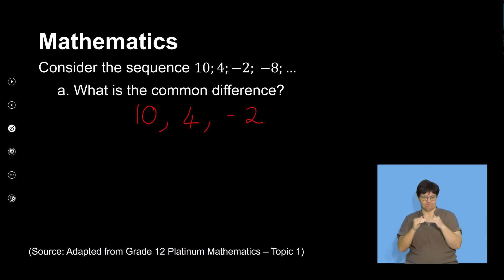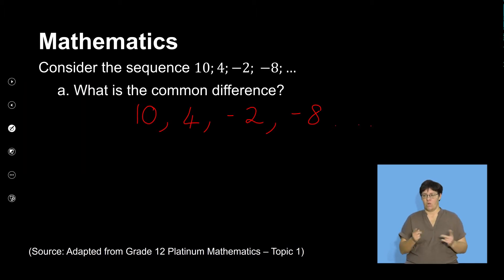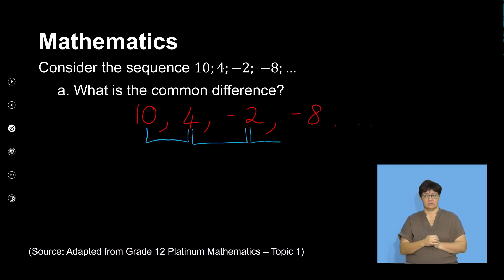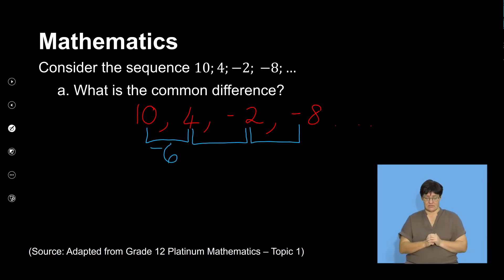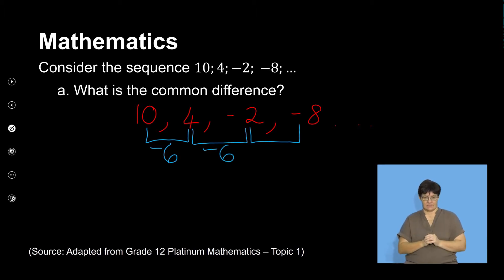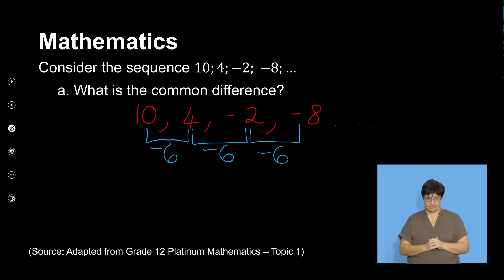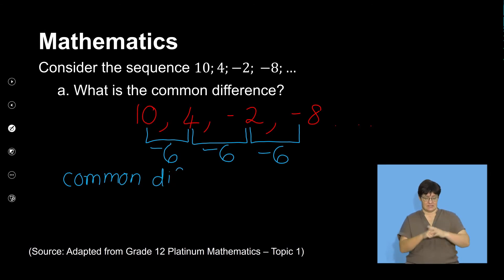So let's first consider the sequence. I'm going to give everyone a second at home to think about it — we need to know what the common differences between these terms are. Between 10 and 4, I can see that I subtracted 6. Then to get from 4 to negative 2, I subtracted 6 again. Then to get from negative 2 to negative 8, I subtracted 6 again. So the common difference is in fact negative 6.